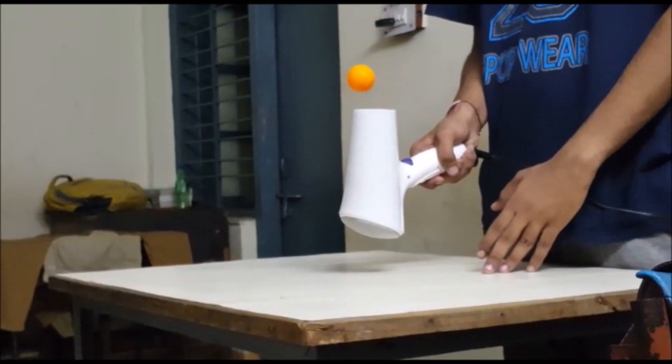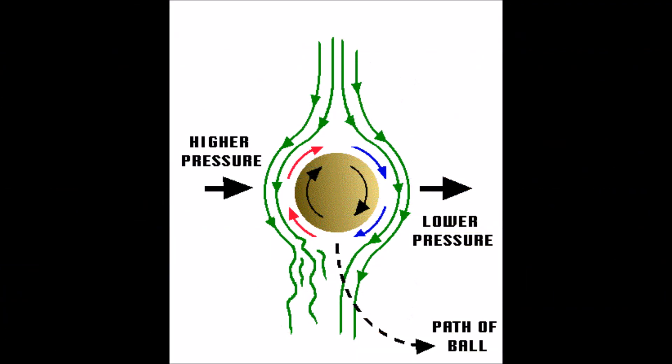Faster air means less air pressure. The slower air around it has higher pressure, and as a result of this higher air pressure column, the ball stays afloat, thereby being a direct application of Bernoulli's principle.